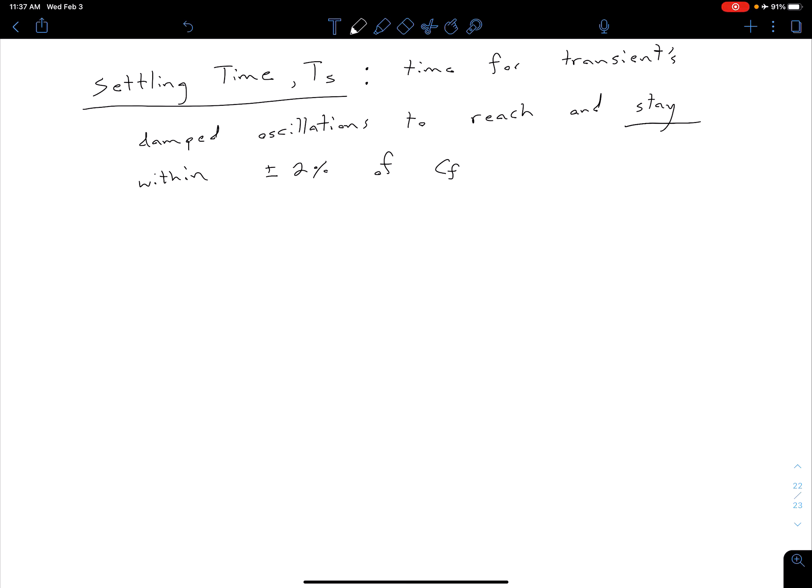Keep in mind, as I've mentioned before, that this is somewhat arbitrary. This would be a 2% settling time. We could also have a 5% settling time or a 1% settling time or whatever percentage you want. But in this case, the standard is to do a 2%, so that's what we're going to look at here.